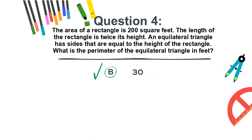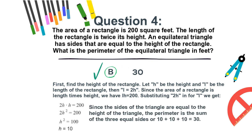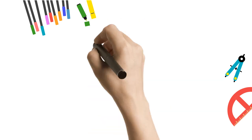The correct answer is b. 30. Let's find the height of the rectangle. Let h be the height and l be the length of the rectangle. Then l equals 2h. Since the area of a rectangle is length times height, we have lh equals 200. Substituting 2h for l, we get the following. Since the sides of the triangle are equal to the height of the rectangle, the perimeter is the sum of the three equal sides, or 10 plus 10 plus 10, which equals 30.